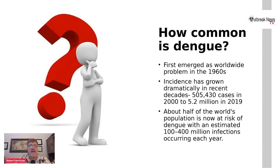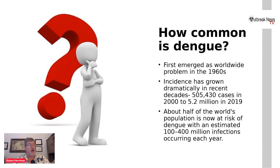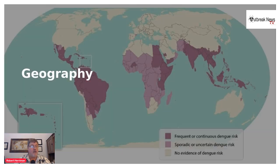How common is dengue? Dengue first emerged as a worldwide problem in the 1960s. The incidence of dengue has grown dramatically around the world in recent decades, with cases reported to the World Health Organization increasing from 505,000 cases in 2000 to over 5 million in 2019. Today, up to 400 million people get infected with dengue each year, approximately 100 million people get sick from the infection, and 40,000 people die from severe dengue.